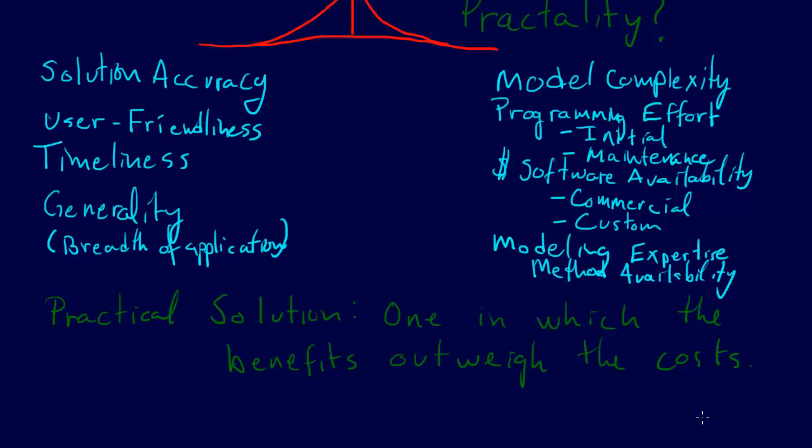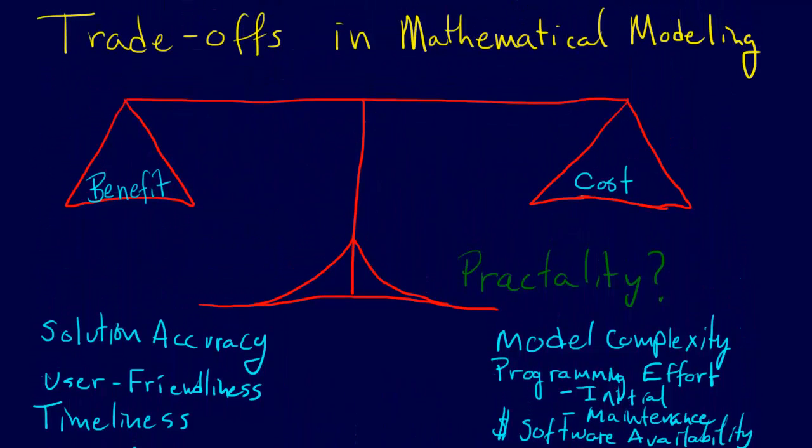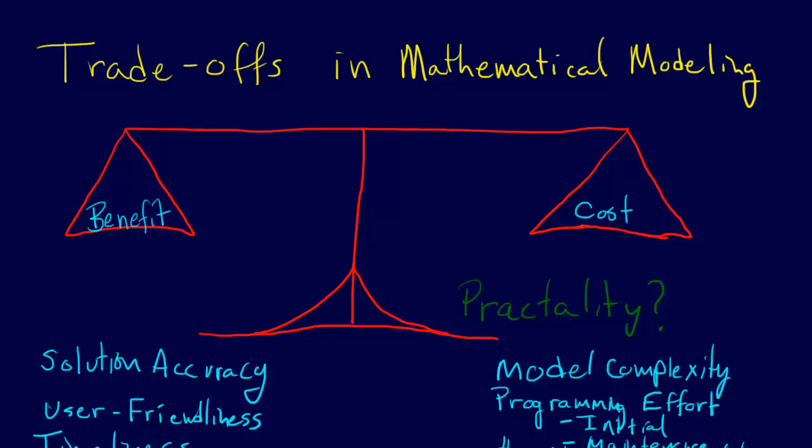And there are all sorts of other complexities that we could add here. Environmental impact. Just all sorts of things that we haven't mentioned, but that could come to bear when you're looking at the benefits and costs. But, realize again that these are some of the trade-offs that you will encounter as you do mathematical modeling. And you always have to be asking yourself, is this solution practical? What is the practicality of implementing the solution that we've come up with?